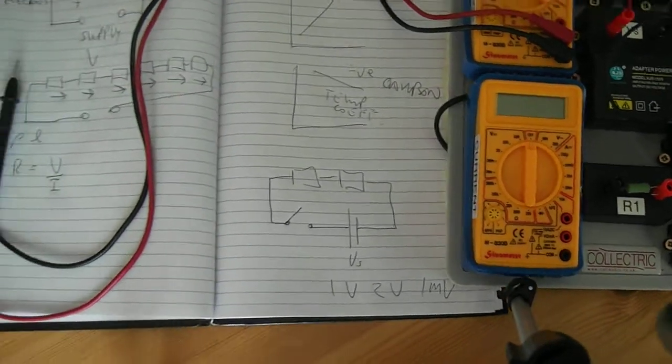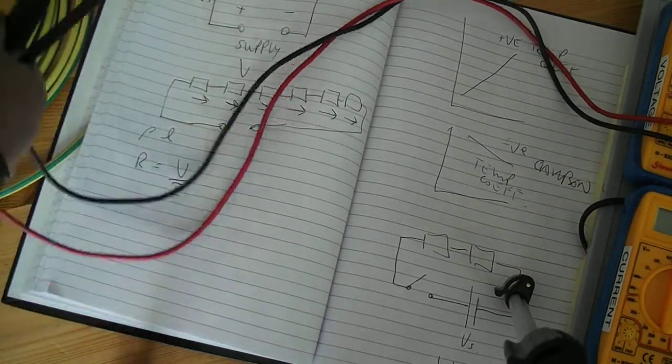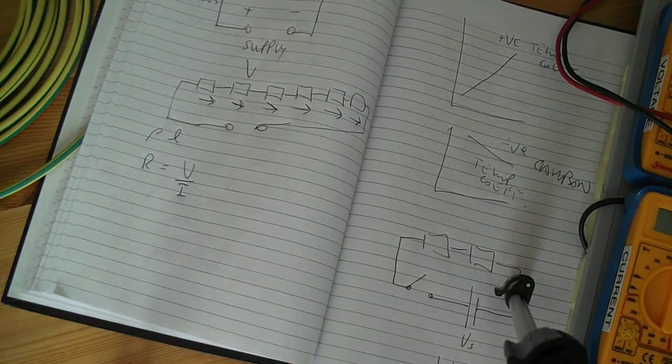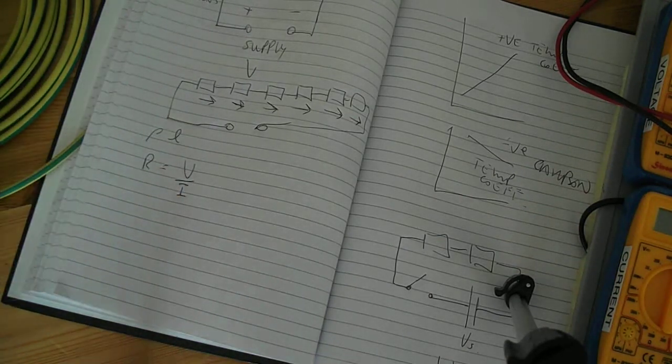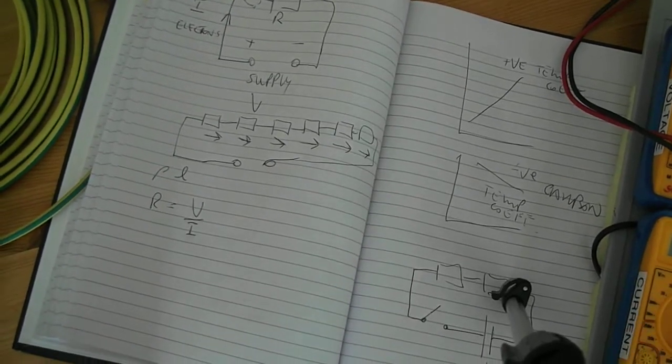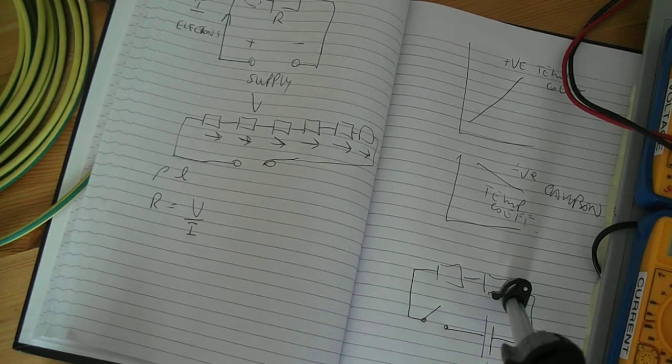And as we said before, volt drop of a cable depends on its resistivity and its length. They're the two main factors that will affect the volt drop of a particular cable.